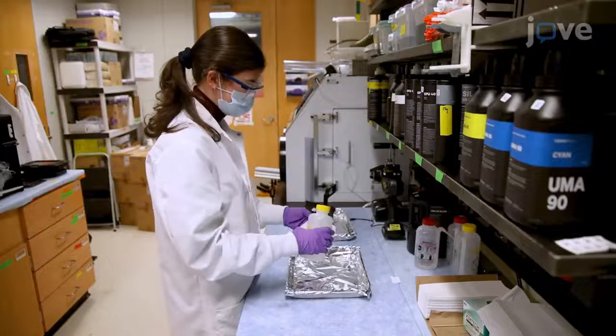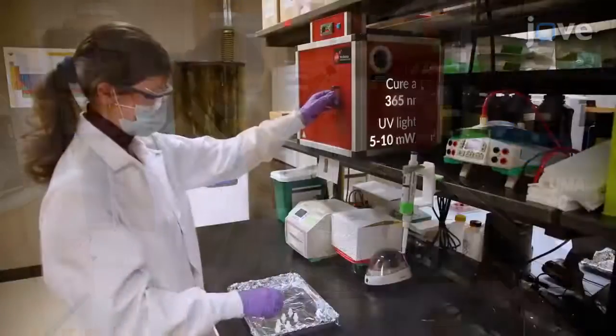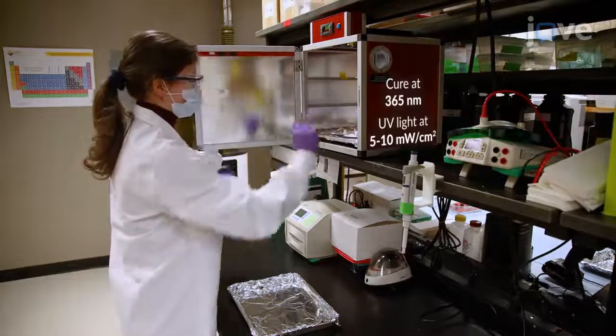Then wash the parts printed in hard resin with the alcohol to remove any excess uncured resin and cure the parts in a UV oven for 1 minute per side.